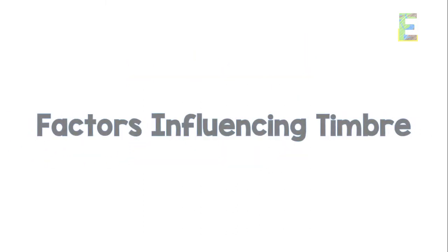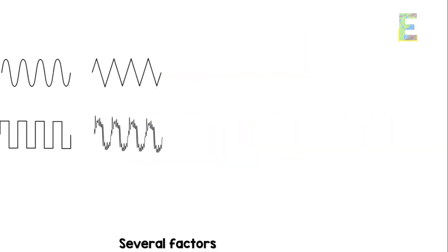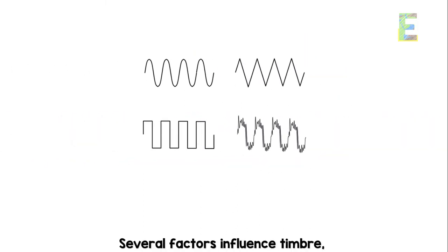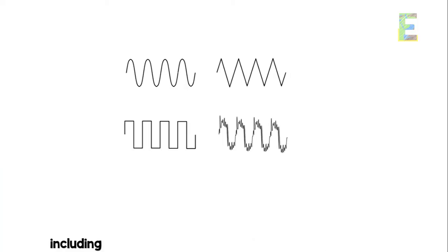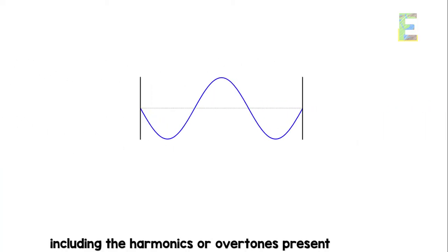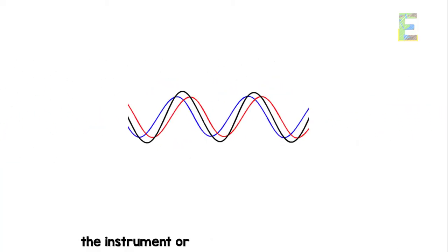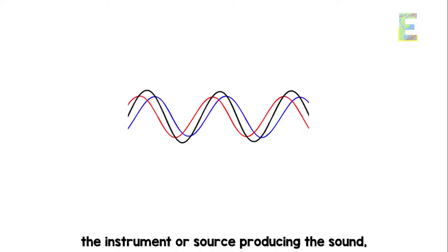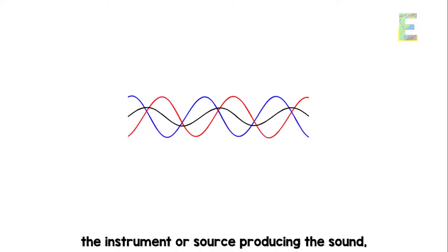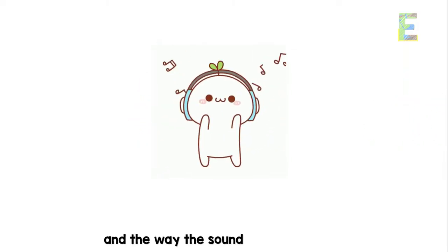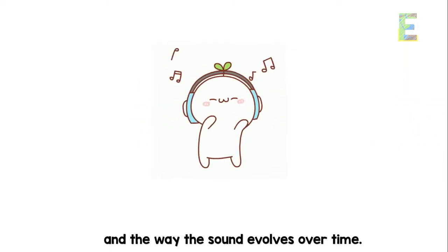Factors influencing timbre. Several factors influence timbre, including the harmonics or overtones present in a sound, the instrument or source producing the sound, and the way the sound evolves over time.